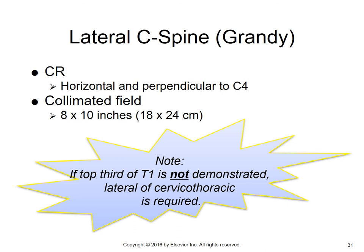It's very important that if the top third of T1 is not demonstrated on the lateral, you have to do a lateral of the cervical-thoracic spine — the swimmers. You're trying to get all seven cervical vertebrae on your lateral, but if you can't because of the shoulders, you'll have to do a swimmers.